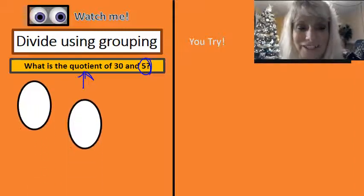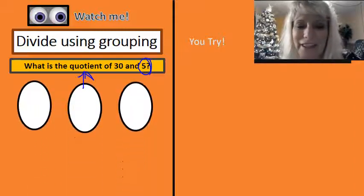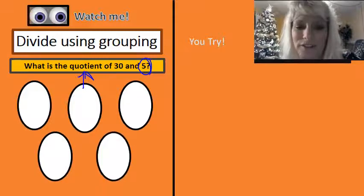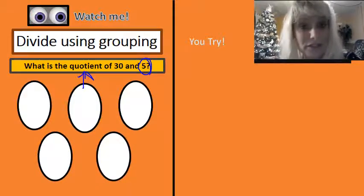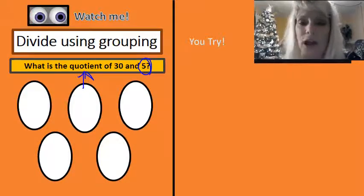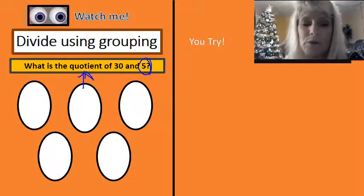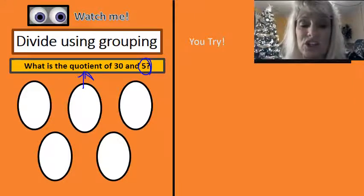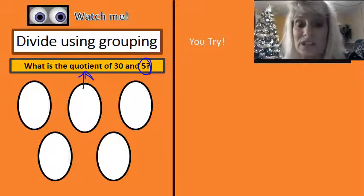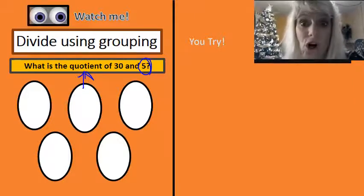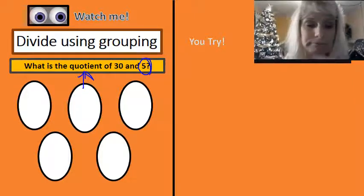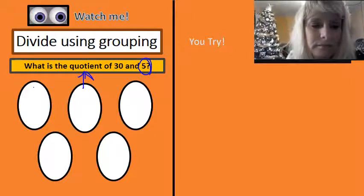One, two, three, four, five — there are our five groups. If you were doing this, you would just make circles. Now I'm going to put one X inside each of these circles until I've gotten rid of all 30.